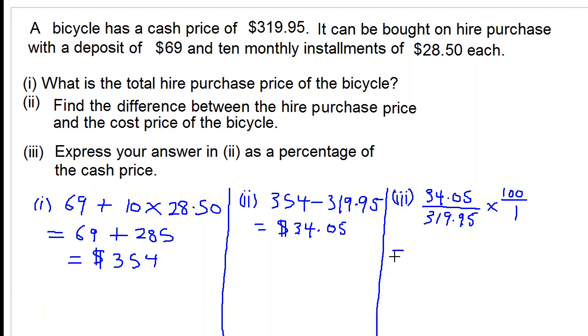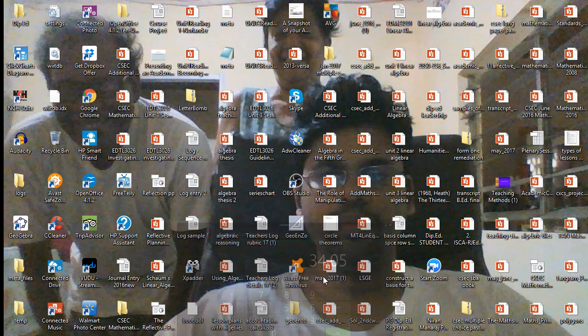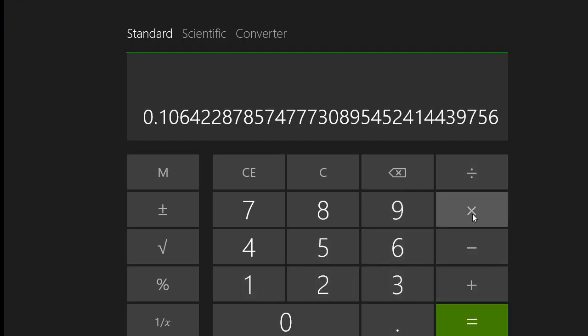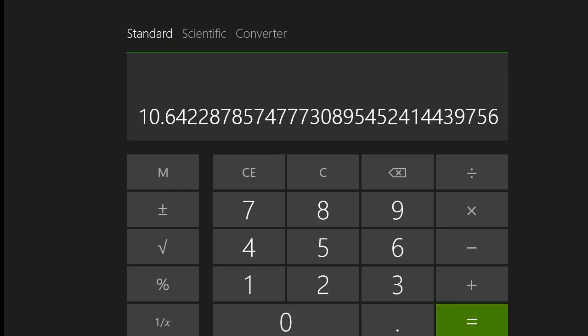Let's go to our calculator and see what we get. $34.05 divided by $319.95. We have 10.6.